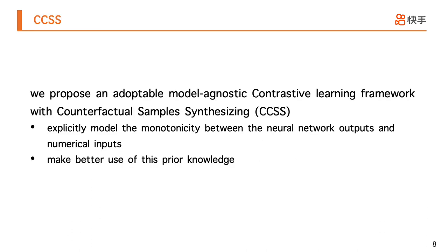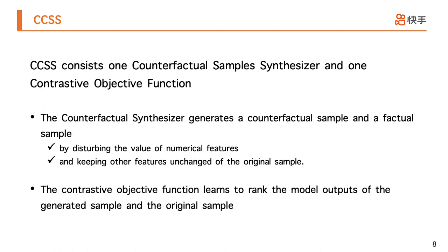In this paper, to explicitly model the monotonicity between neural network outputs and numerical inputs, and to make better use of this prior knowledge, we propose an adaptable contrastive learning framework with counterfactual sample synthesizing. Our proposed CCSS consists of one counterfactual sample synthesizer and one contrastive objective function.